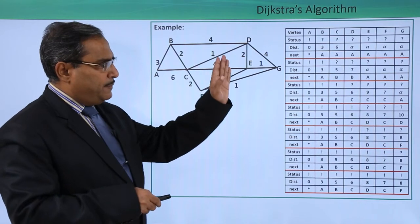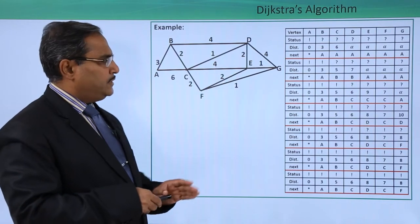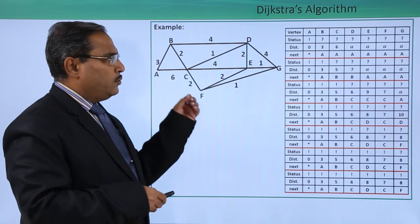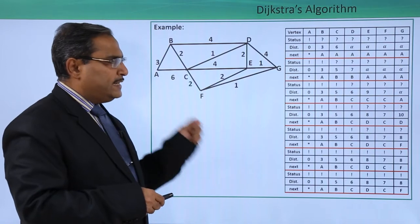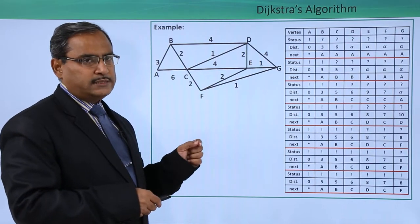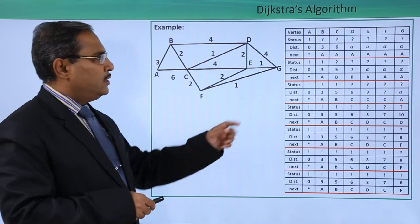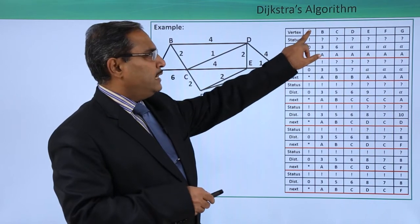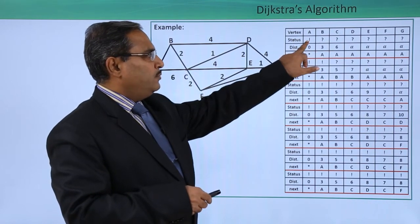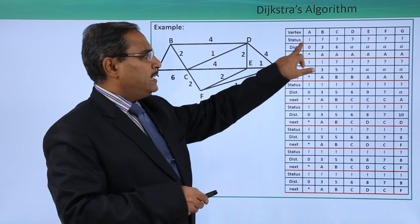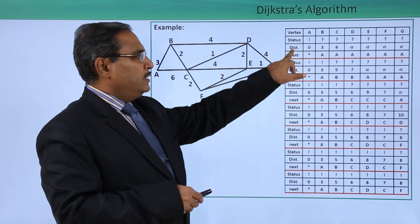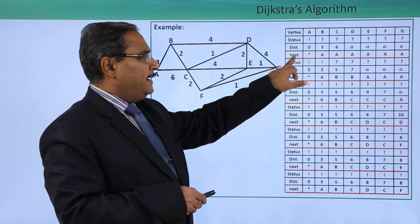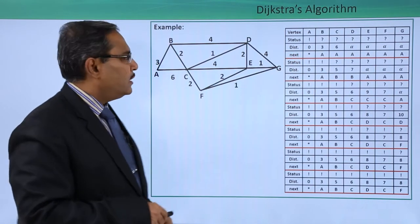We list vertices A, B, C, D, E, F, G in our table. We are considering A as v0, the source vertex. So status[A] = '!', dist[v0] = 0, and next[v0] = '*'.